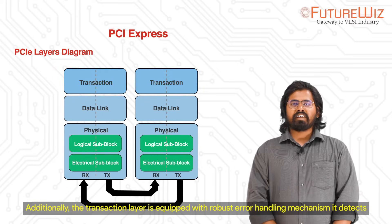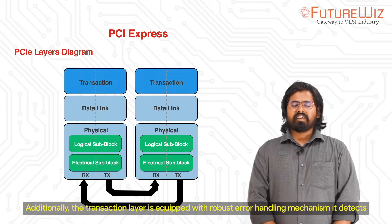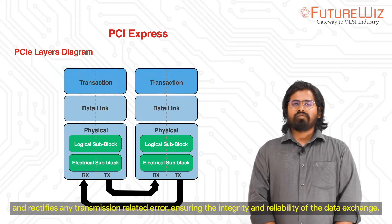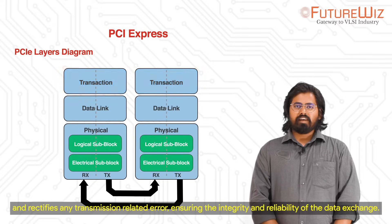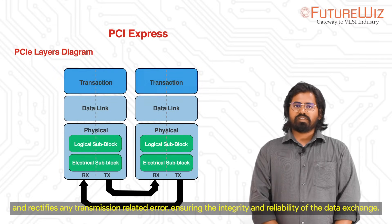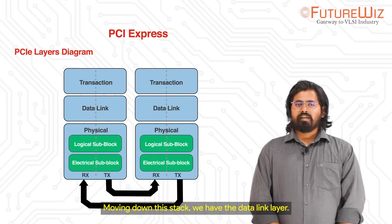Additionally, the transaction layer has a quite robust error handling mechanism. It detects and rectifies any transmission-related errors, ensuring the integrity and reliability of the data exchange.